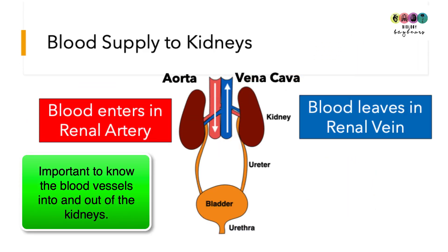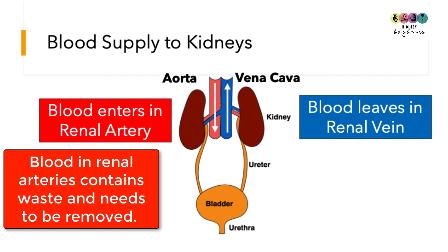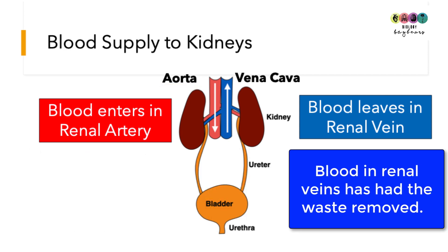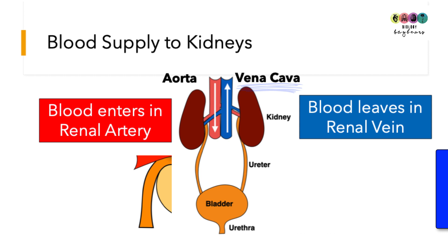It's really important that you can discuss the blood flow into and out of the kidneys, as it is examined often at both ordinary and higher level. Blood enters both kidneys via the renal arteries, which branch directly off the aorta. This blood contains a lot of waste. Blood leaves the kidneys through the renal vein, which links into the vena cava — and this blood has no waste.